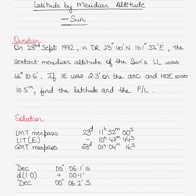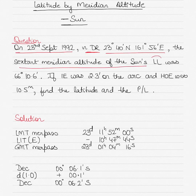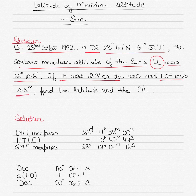The question is that it is 23rd of September 1992 and your dead reckoning or DR position is provided to you. The sextant altitude of the sun's lower limb was 66 degrees 10.6 minutes. The index error is 2.3 on the arc and the height of eye is 10.5 meters. All you have to do is find the latitude and the position line.